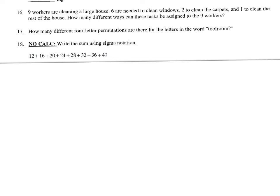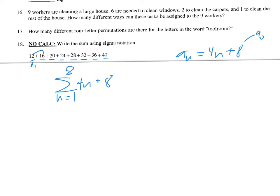Next, write this in sigma notation. I'll come up with a formula first — calling the first term A1. The pattern is plus 4, so a sub n equals 4n plus 8, where a sub 0 equals 8. That goes inside the sigma as 4n plus 8, starting at n equals 1. Counting the terms: 2, 3, 4, 5, 6, 7, 8 — so 8 terms. Double-checking: 4 times 8 plus 8 equals 40, which matches the last term.